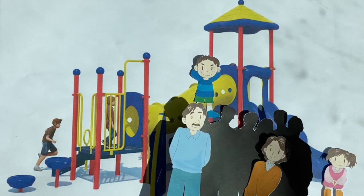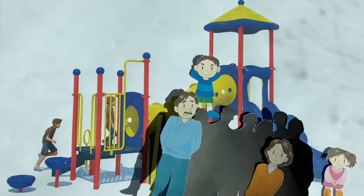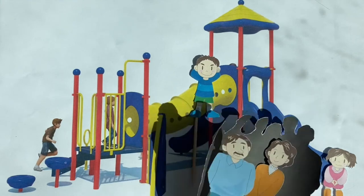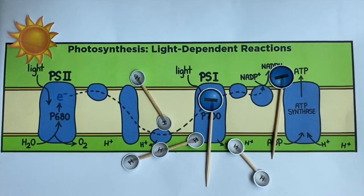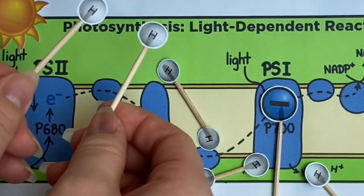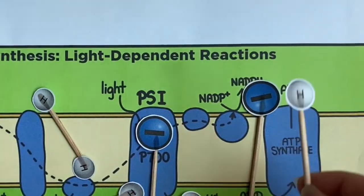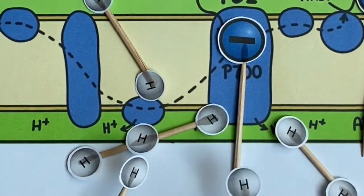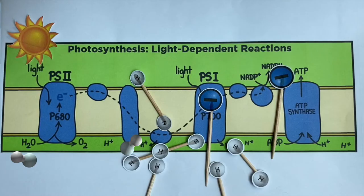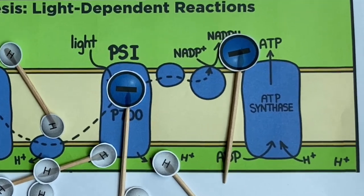Eventually, too many parents will be on one side of the playground, forcing them to find a way out. Similarly, hydrogen ions move and cause a hydrogen ion concentration imbalance in the membrane. They want to find a way to restore balance, and the only way out for these ions is through the ATP synthase.